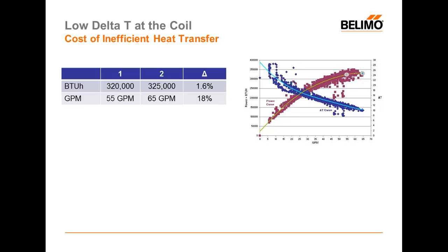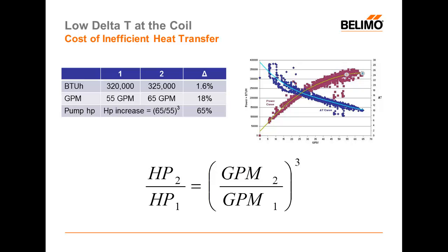So the question becomes: how much money does it cost to pump 18% more water? The pump affinity law tells us that we have to cube our flow increase to calculate the horsepower increase. That means it takes 65% more pump horsepower — or 65% more dollars — to increase our BTU by less than 2%. As you can see at the very high end of this coil curve, the last few percent of BTUs are very expensive.